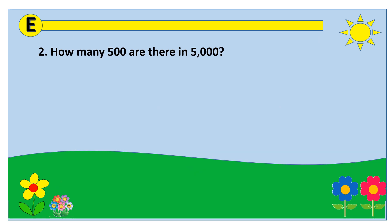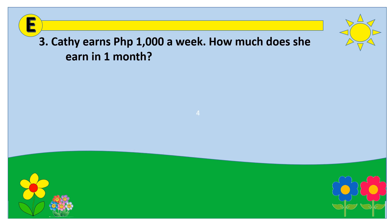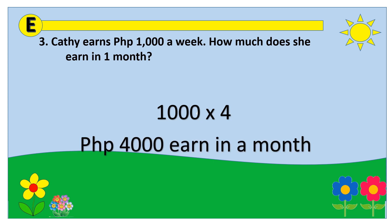Number 2: How many 500s are there in 5,000? The solution: 5,000 divided by 500 equals 10 five-hundreds. Number 3: Kathy earns 1,000 Philippine Pesos in a week. How much does she earn in a month? First, we need to know how many weeks are in a month. Since there are 4 weeks in a month, we multiply that by 1,000 Philippine Pesos. So 1,000 times 4 equals 4,000 Philippine Pesos earned in a month.